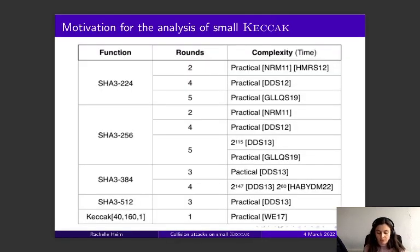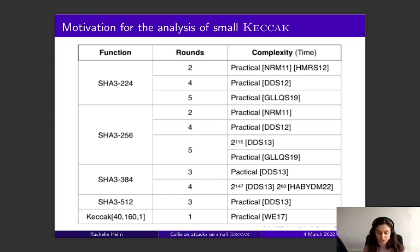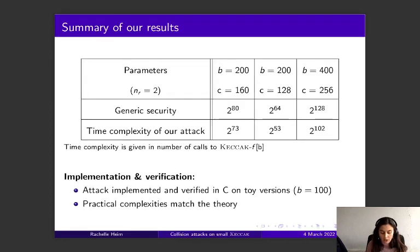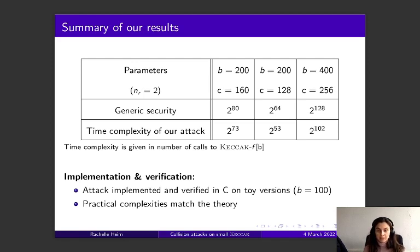Here is a table which sums up the published collision attacks on Keccak hash functions. As you can see, analyses so far have mainly focused on standardized and thus large Keccak instances. On the other hand, for the smallest instance of the crunchy contest, only collisions with the permutation reduced to one round have been successfully attacked. We designed the first attack on three small Keccak instances with the permutation reduced to two rounds. Our attack, although not practical, is significantly more efficient than the generic attack. It has been implemented and verified on toy versions, and the practical complexities obtained match the theory.